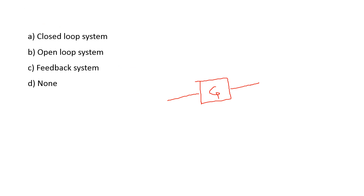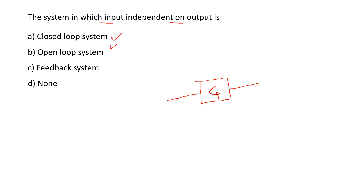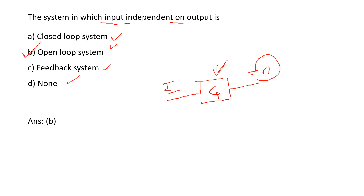Next: the system in which the input is independent of the output is — options are: closed loop system, open loop system, feedback system, none of the above. In an open loop system, the output depends upon the input, but the input is independent from the output. So this describes an open loop control system. Option B is the right answer.